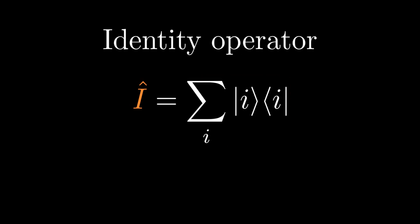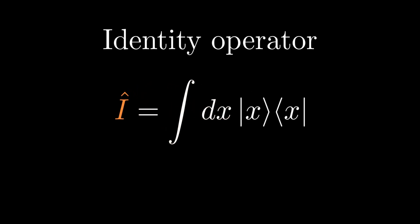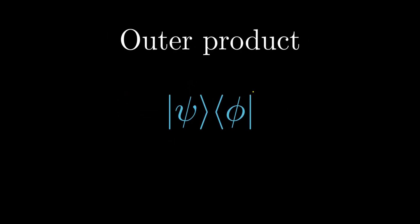Following the same argument, but for continuous spectrum yields an integral expression for the identity operator. Notice that we now have a ket bra. This is known as the outer product. This has the two parts of the angular bracket in reverse order to the inner product. All outer products are linear operators, whereas all inner products are different.